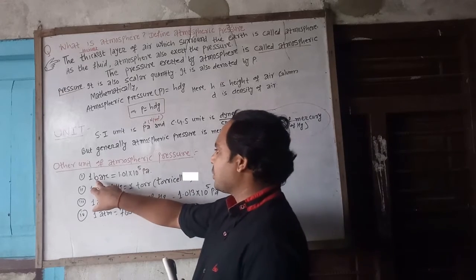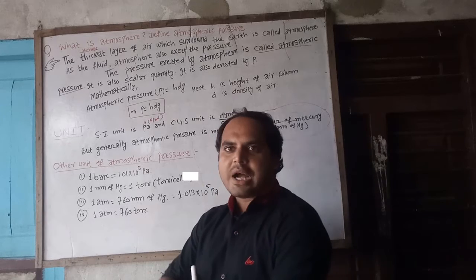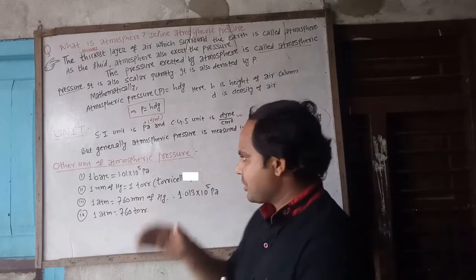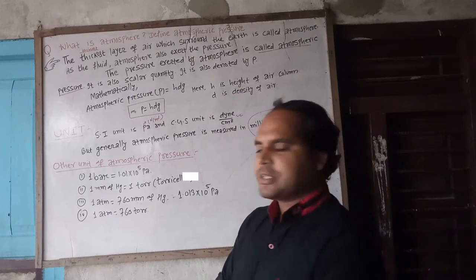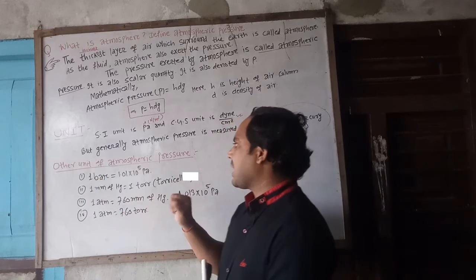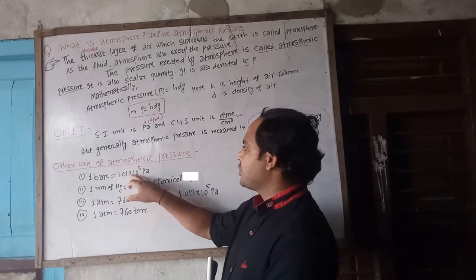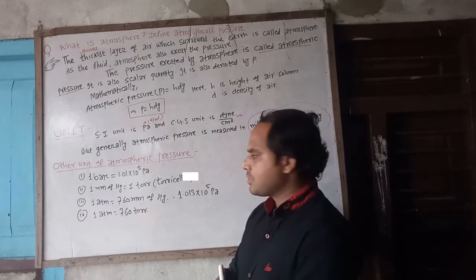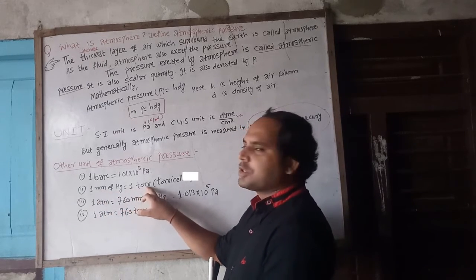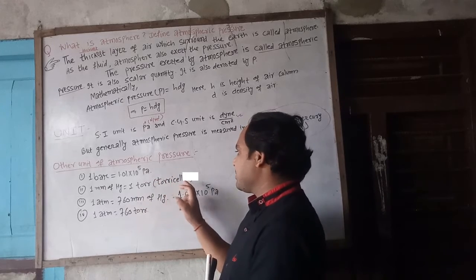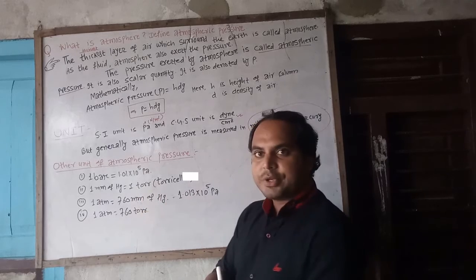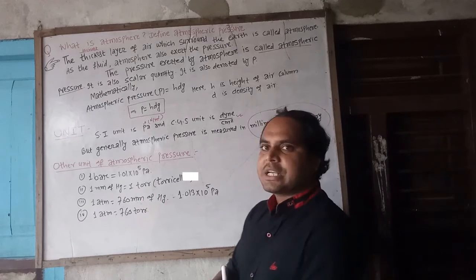We also use bar as a unit. One bar equals 1.01 times 10 to the power 5 Pascal. Similarly, one millimeter of mercury — at this point, you need to know all the conversions.